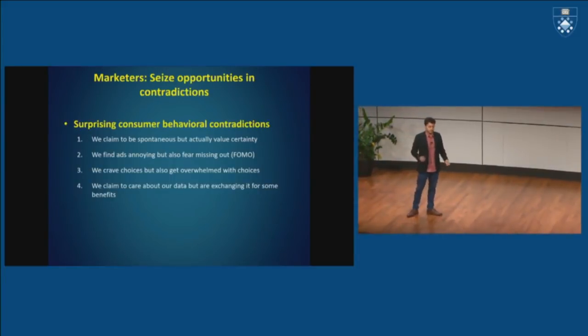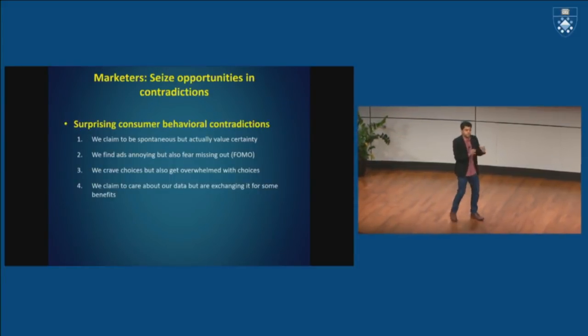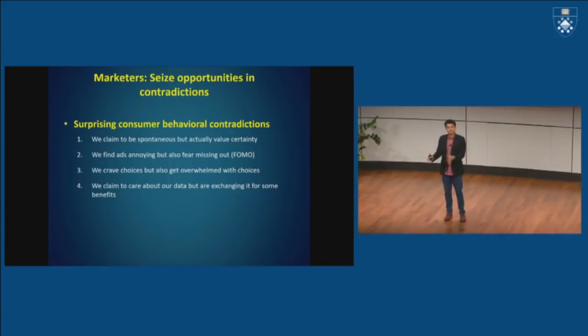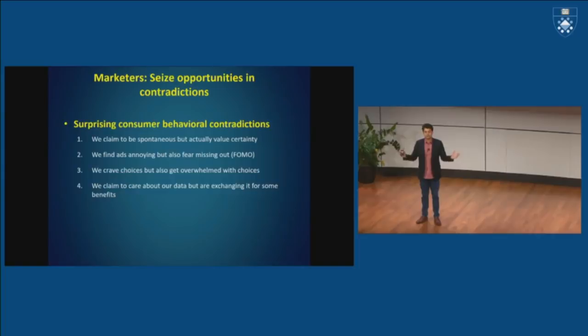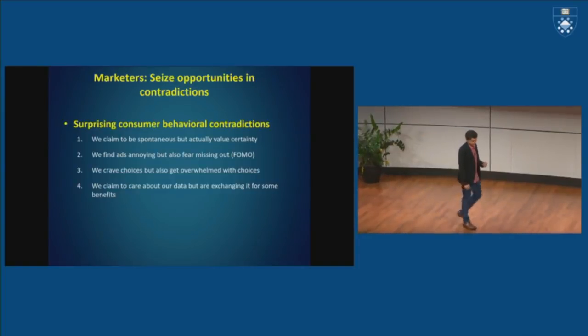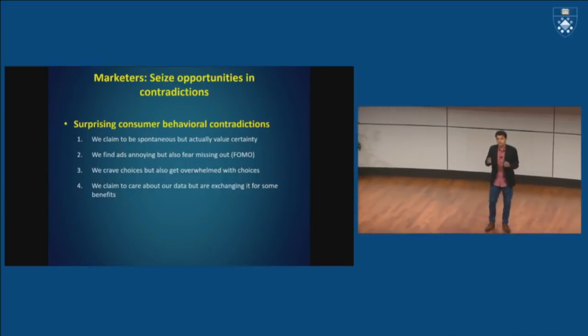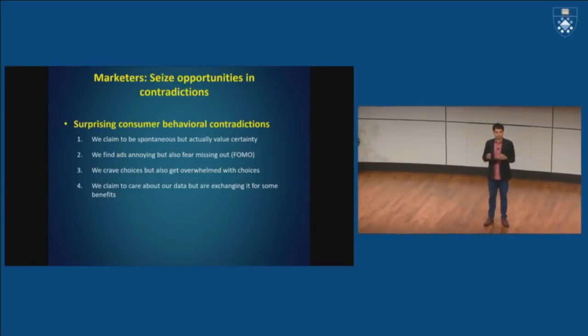Consumers will say we find ads annoying, they're intrusive, they're overwhelming, they're too much information right there, but they also have a fear of missing out. And so while explicitly they may get turned off by ads, there's an implicit bias in favor, because ads can actually inform them of what's the latest and the greatest around them. So the fear of missing out gets alleviated through ads. Consumers will say we crave choices, but when we give them too many choices, there's also an information overload problem. It's a choice paradox problem.